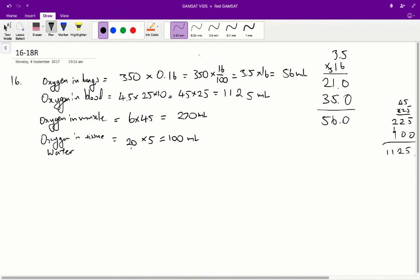And oxygen in tissue water, well, there's 20 liters and 5 mils of oxygen per liter. So it's 20 times 5. So overall, oxygen in the blood accounts for the most amount of oxygen in an organ. So the answer is therefore A.